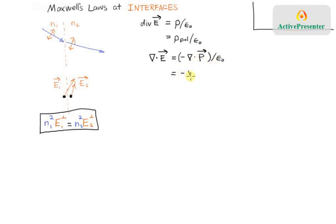In other words, this is equal to negative divergence of P over epsilon naught, and you can always write P over epsilon naught as the divergence, instead of P over epsilon naught, the divergence of chi E. If I just bring this term over to this side and group the two divergences together,